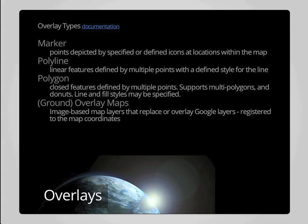Another overlay type is a polyline, which allows you to define multiple points along a linear feature. A polyline can be as simple as two points defining a straight line, or it may be defined by hundreds of points representing, say, a bike trail, a hiking path, or a truck route through a city. You can also define the style for the polyline in terms of thickness, color, etc.